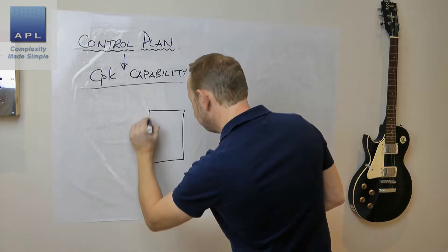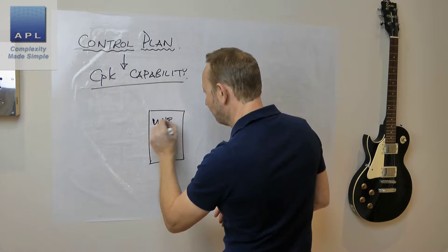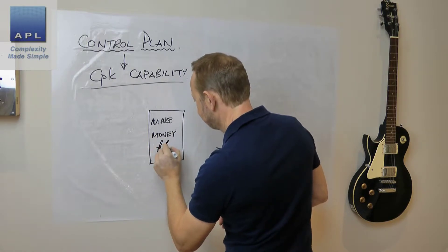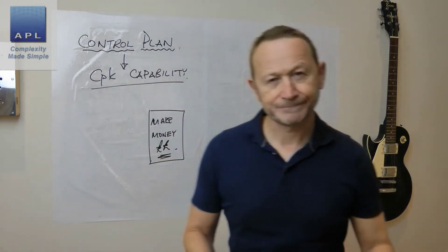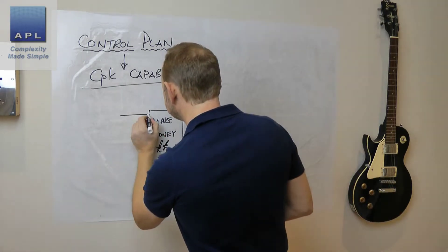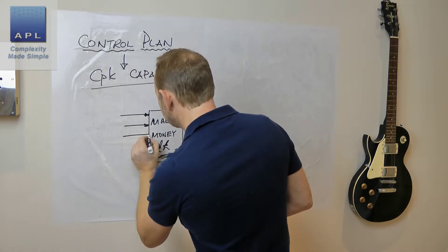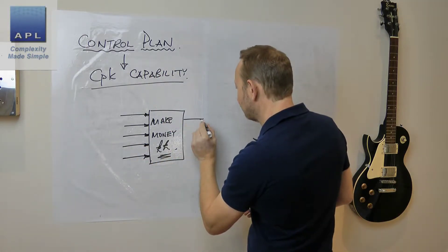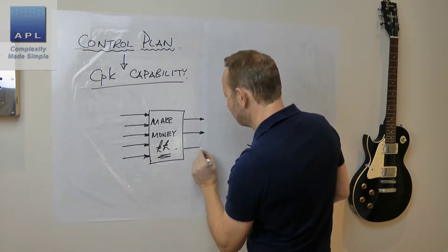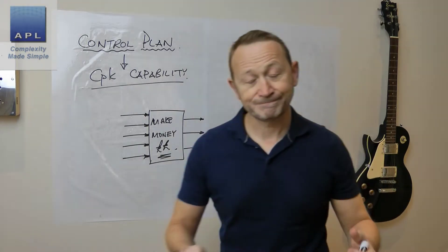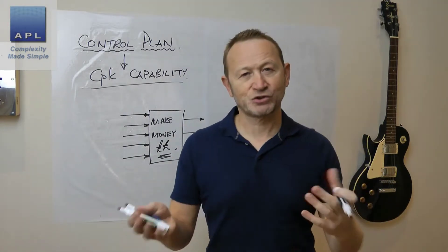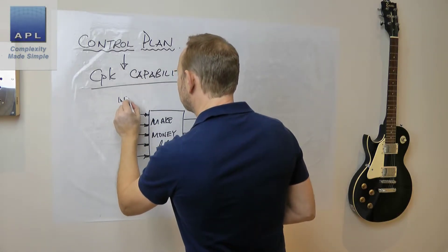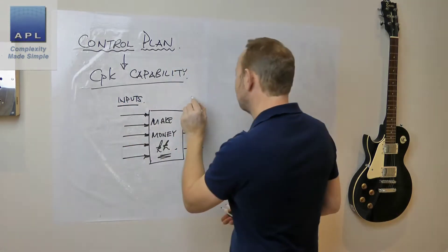Everything of course is a process. You've got your process, and as always you're trying to make money. We've got inputs to the process and we've got outputs — things that the customer is interested in: tolerances, specifications, could be cost, could be strength, all sorts of different features that the product is trying to achieve to keep your customer happy.